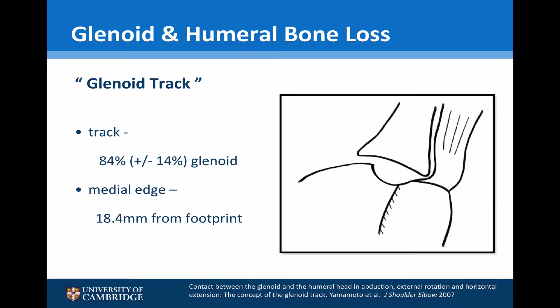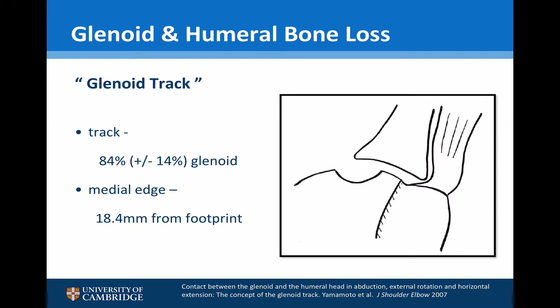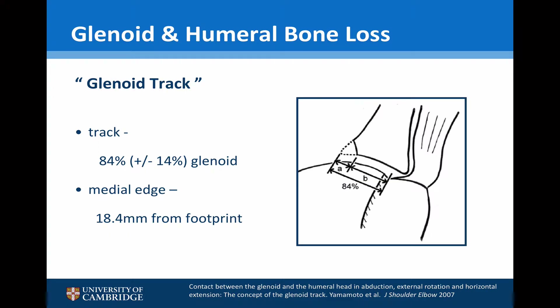If the Hill-Sachs lesion sits within the glenoid tract when the shoulder is abducted and externally rotated, it will not engage with the front of the glenoid. However, if any part of the Hill-Sachs lesion lies anterior to the glenoid tract, it will engage. This is compounded further if there is significant glenoid bone loss, as the width of the glenoid tract is decreased.